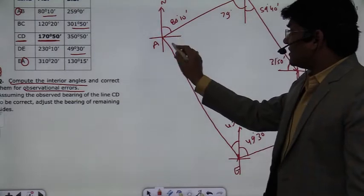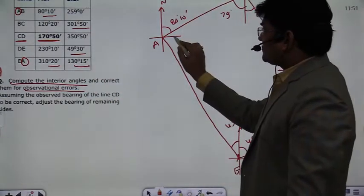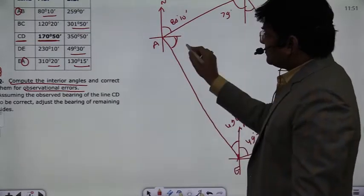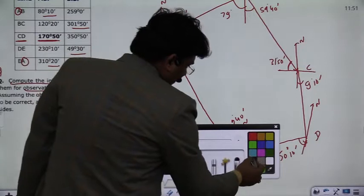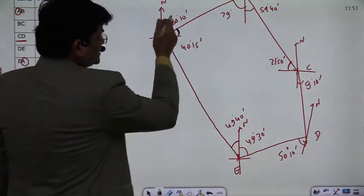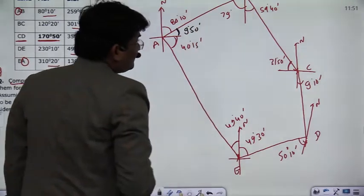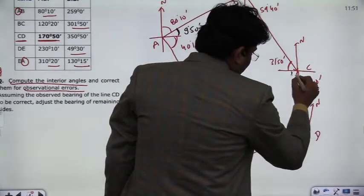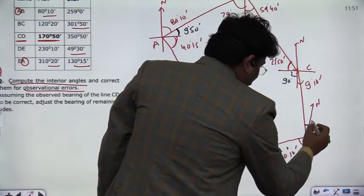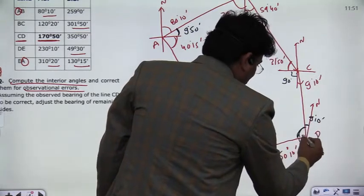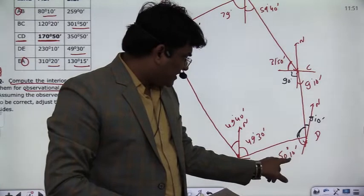For the interior angles, we need to read these angles. E to A measurement is given. A to E measurement is 130 degrees 15 minutes. This angle at D comes out to be 120 degrees and 40 minutes. The sum of angles at this stage — 9 degrees 10 minutes, 50 degrees 10 minutes, and 59 degrees 20 minutes — adds up correctly.